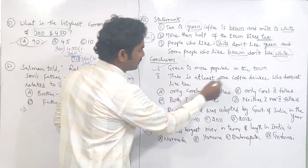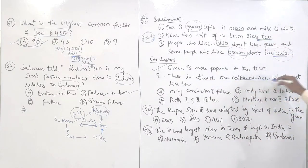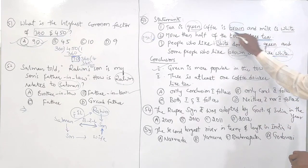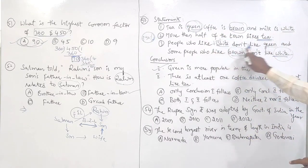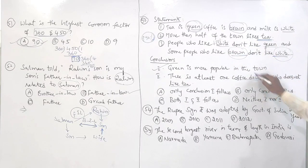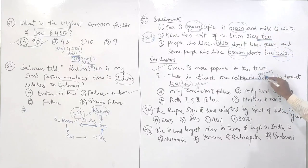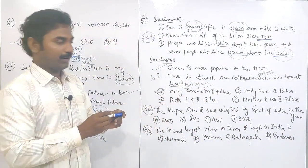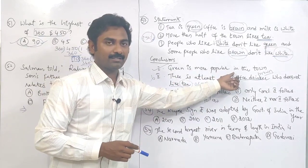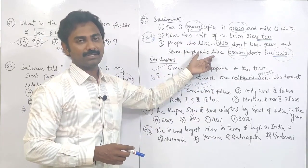Look at the second conclusion: there is at least one coffee drinker who does not like tea. Is there any relationship given about coffee drinkers and tea drinkers? Coffee is brown color and tea is green. Is there any relationship between brown and green here? White, green, brown, white — there is no relationship between coffee drinker (brown) and tea drinker (green) in any of the three statements. So the second conclusion is wrong.